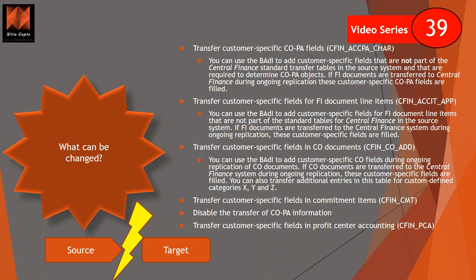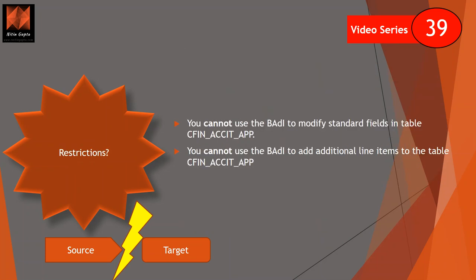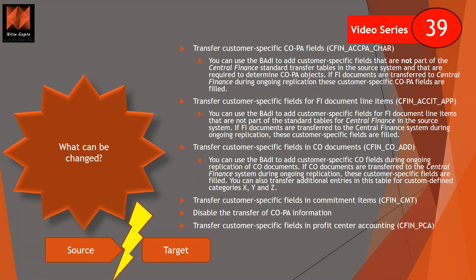In summary, you can change mostly things in the customer-specific namespace fields. However, there is a limitation — you cannot change standard fields. You are not allowed to modify standard fields in the BADI, whether in the accounting app or IT app, and you cannot add additional line items to the table. So in the customer namespace you can work with FI documents, CO documents, commitment, profit center, and Copa — but standard fields remain as-is.